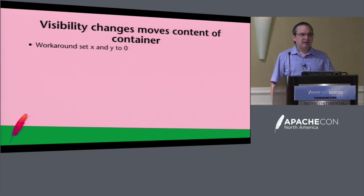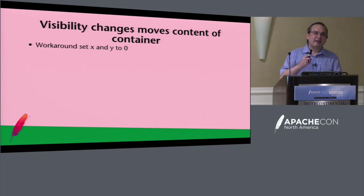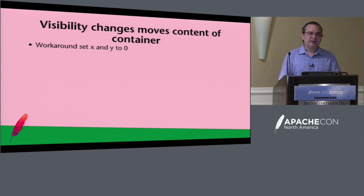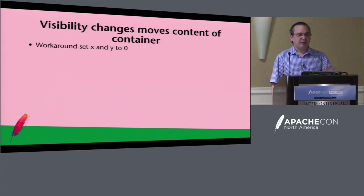Have we made Jira issues for these? Yes, just about every single one of them. If you change the visibility, the contents inside a container move around. I think this has improved but hasn't been 100% fixed. The workaround used to be to set X and Y to zero rather than leaving them unset. This used to use absolute positioning, and I think recent changes to the SDK have changed that, so this one may actually be fixed now.